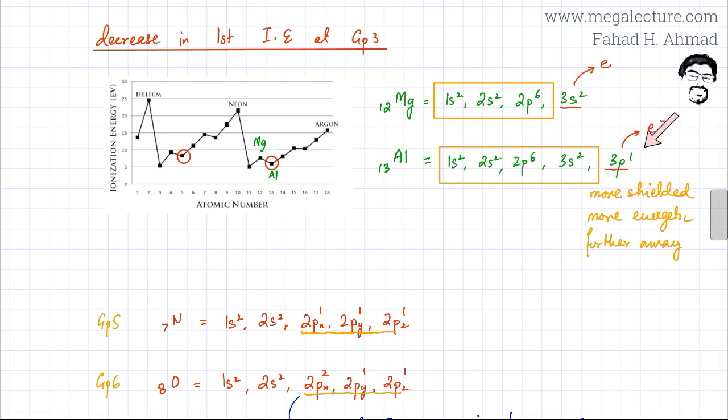What this does is that this subshell would be further away from the nucleus of aluminum and there would be more shielding because you would have more subshells coming in between this electron and the nucleus of aluminum. The attraction of aluminum's nucleus for this electron would decrease.